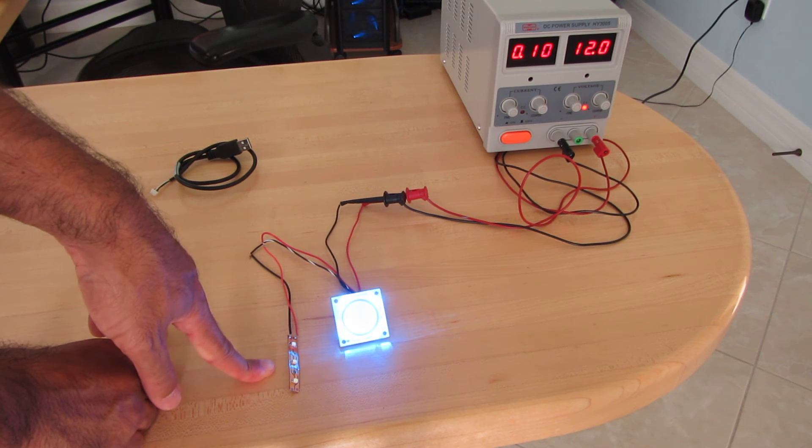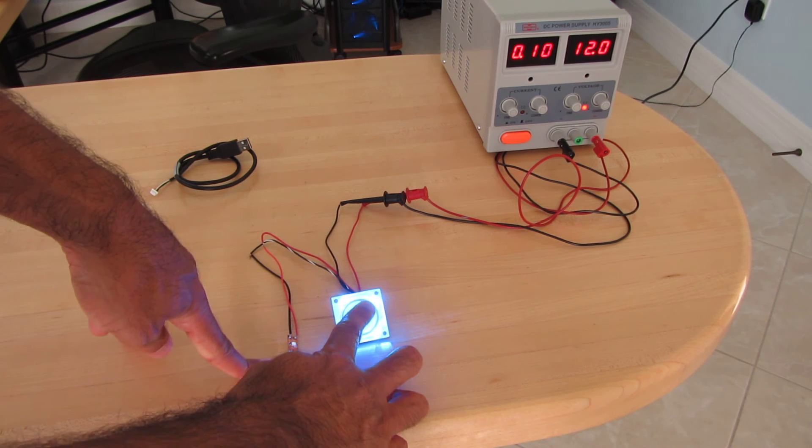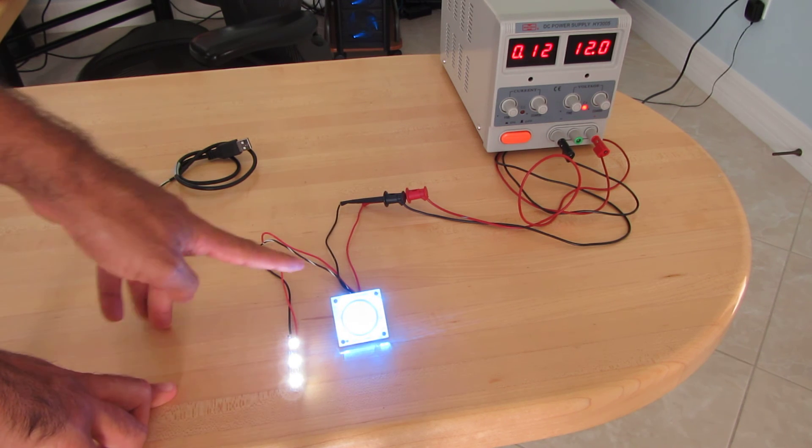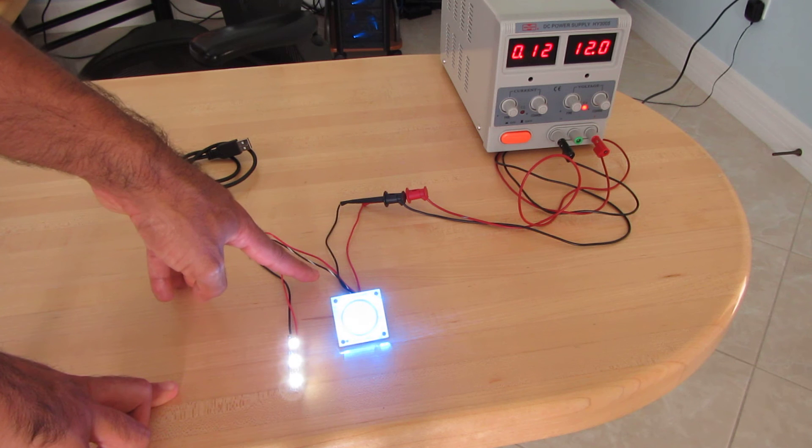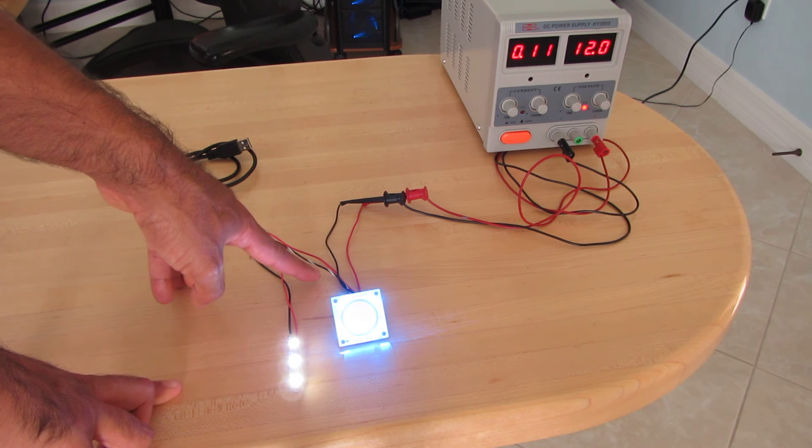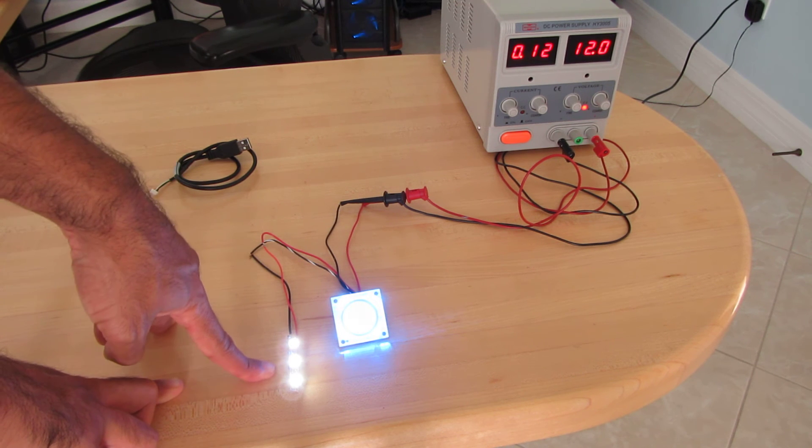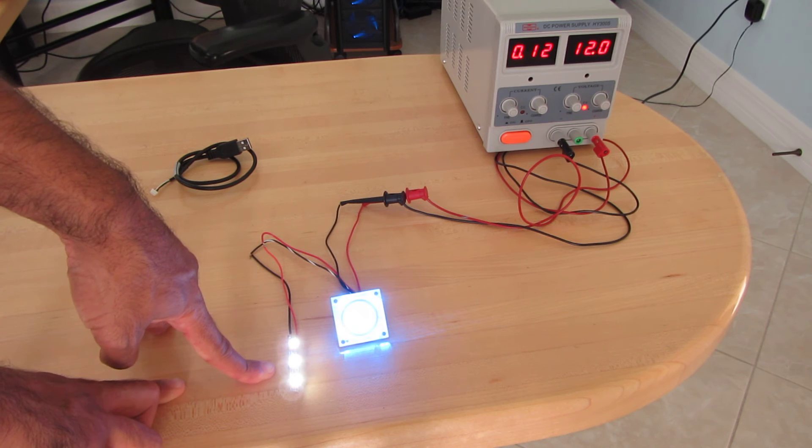So it's a low side FET driver. Again, when we turn it on, what's happening is now there's ground on this black wire with white stripe allowing the lights to turn on. Very simple.